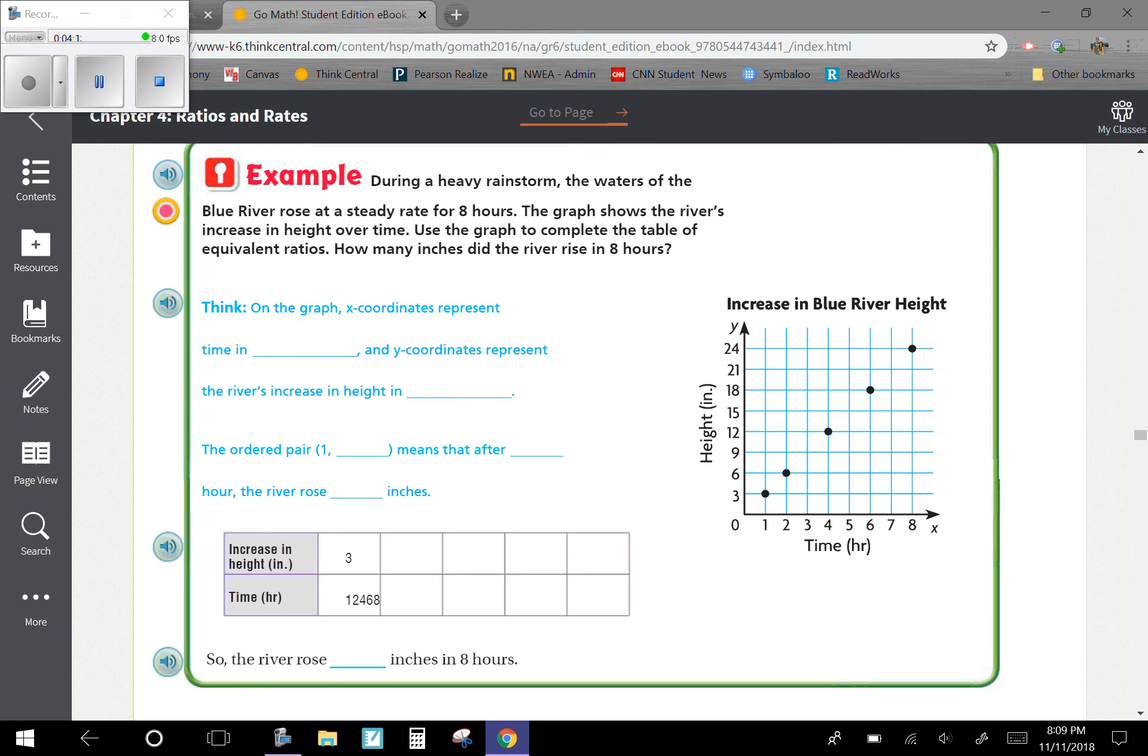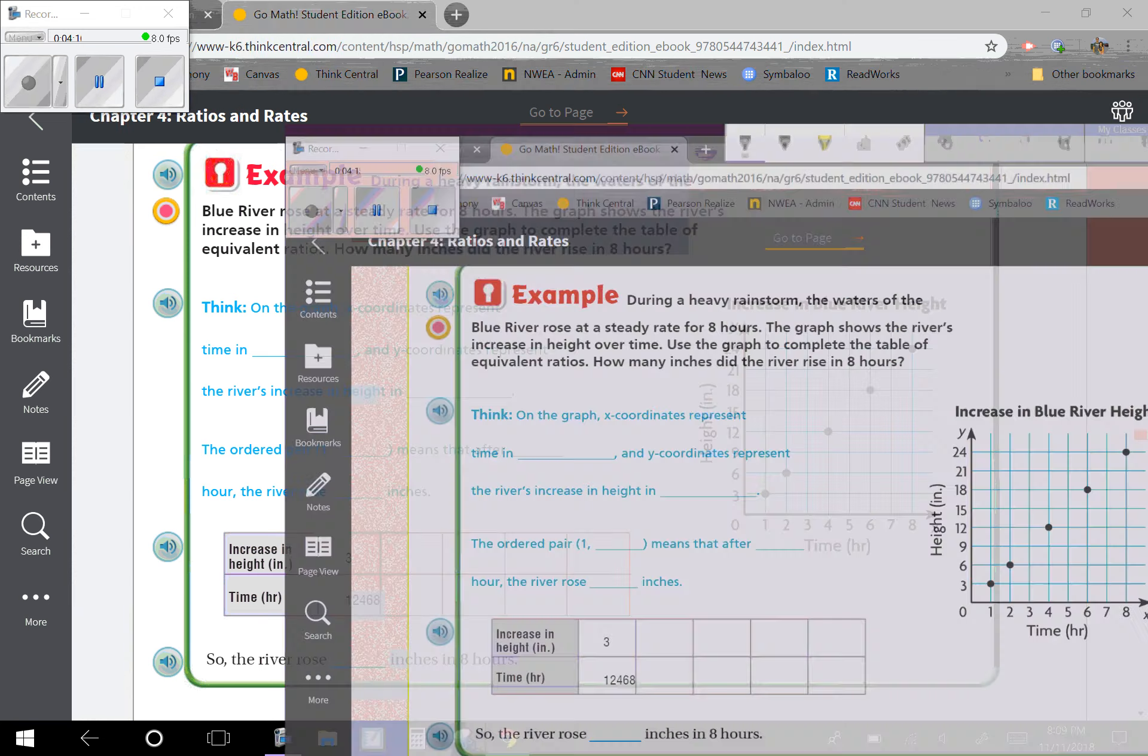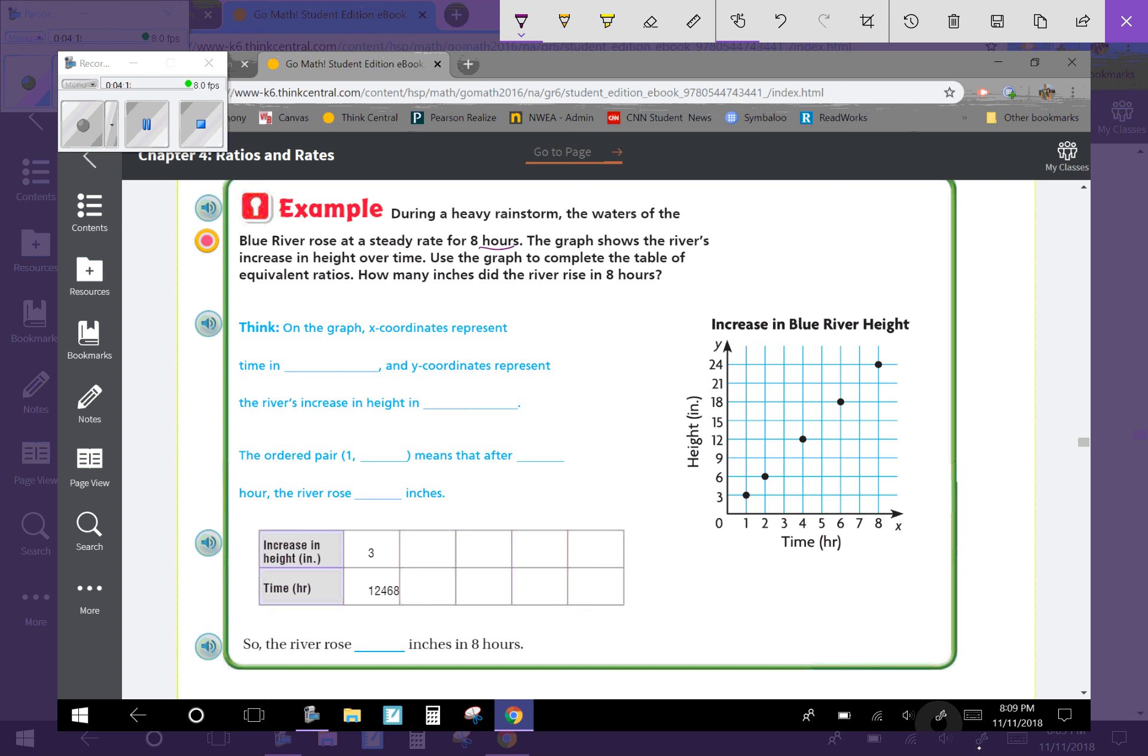We're going to think: on the graph, the x-coordinate represents time in hours, and the y-coordinates represent the river's increase in height in inches. The ordered pair 1, blank, which is going to be 1, 3, because over here on the graph they go right 1 and up 3. So 1, 3 means that after 1 hour the river rose 3 inches.